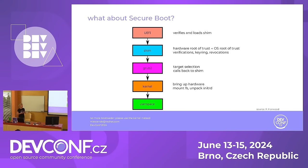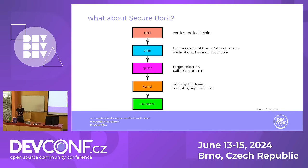The shim can do verifications and revocations, and it will only load a next-stage bootloader that it knows has been signed. In this diagram, that's GRUB. GRUB gives you a menu where you can choose a target kernel or operating system, edit command line options, and it calls back into shim to verify the kernel you've chosen. Finally, if the kernel is correct, signed, and trusted, it will do its thing and get you into user space.